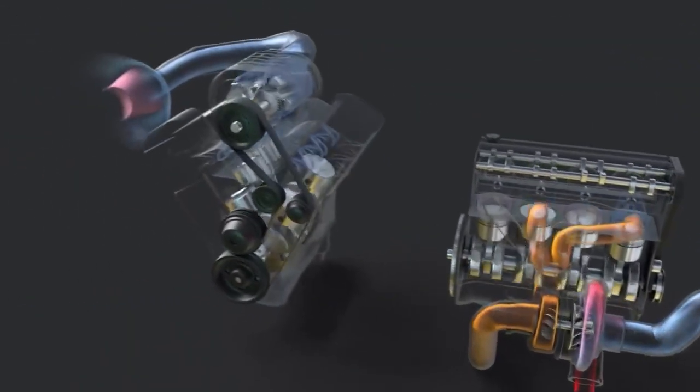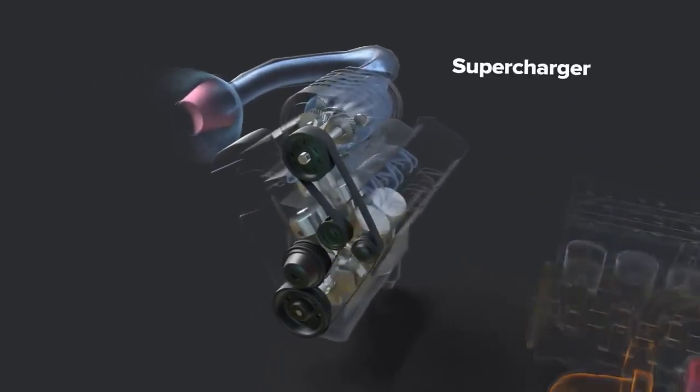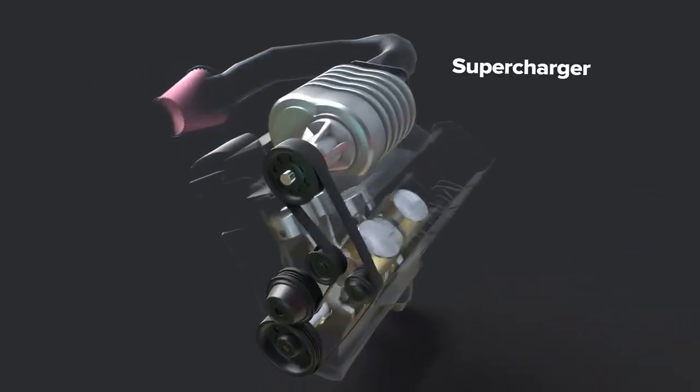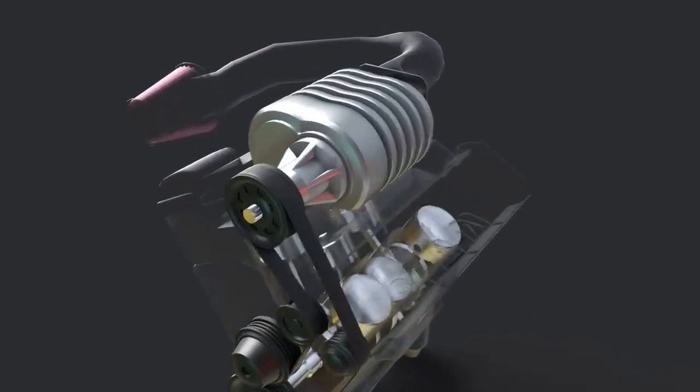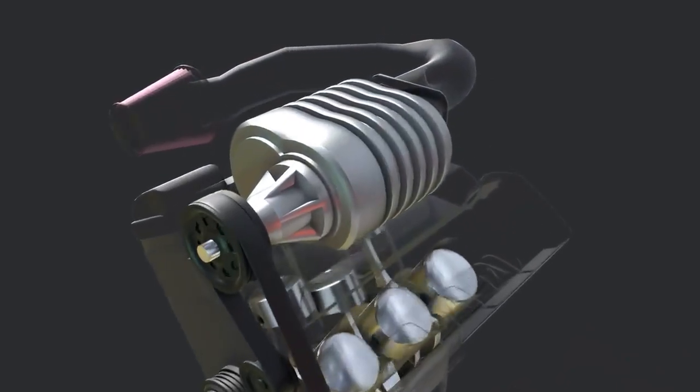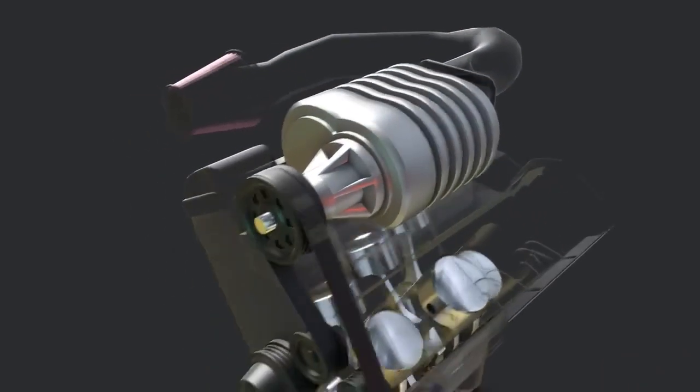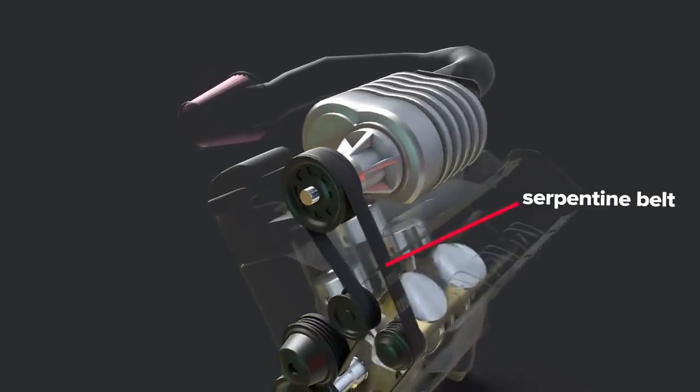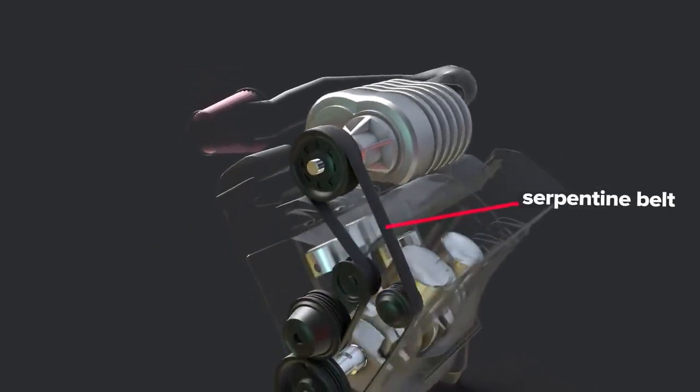Let's look at how each unit works, starting with a supercharger. The supercharger type shown here sits on top of the air intake manifold. A serpentine belt transfers crankshaft power to the supercharger pulley.